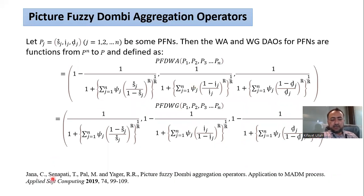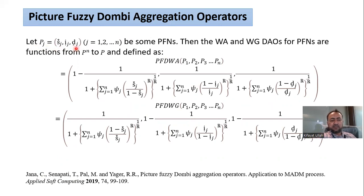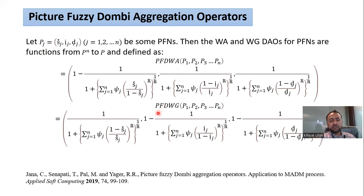Janna et al. back in 2019 also extended Dombi aggregation operators to the environment of picture fuzzy sets. For any finite number of picture fuzzy numbers, the picture fuzzy Dombi weighted averaging operator is given in the first expression, while picture fuzzy Dombi weighted geometric operators are given in the second expression.